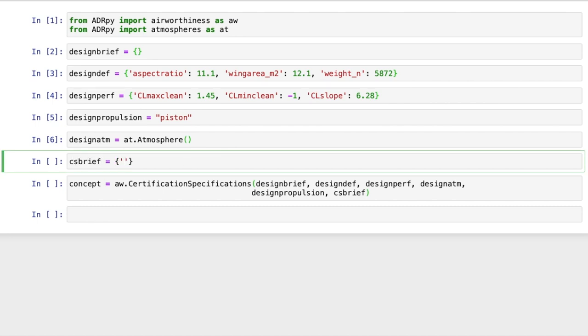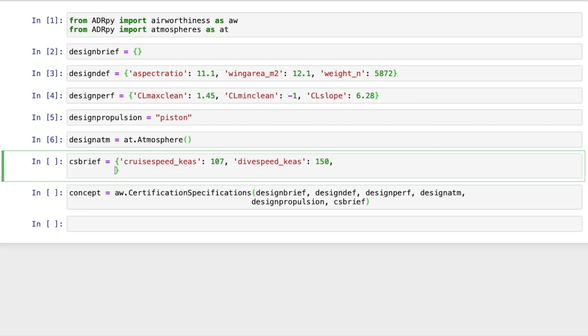Now, on to the CS brief dictionary. In addition to the target cruise speed, we need to specify the dive speed VD in knots equivalent airspeed, the speed which, when exceeded during the dive, may result in buffeting, excessive vibration, damaging flutter, or loss of control authority. Should dive speed not be specified or be outside of the regulatory requirements, VD defaults to the minimum possible value as permitted by CS 23.